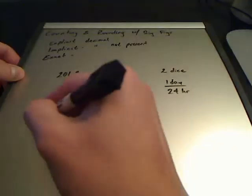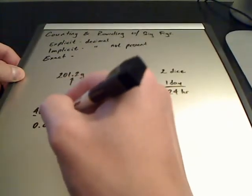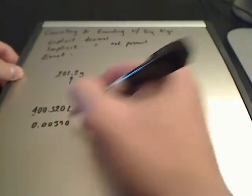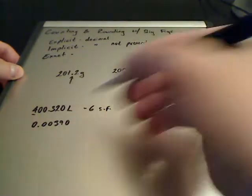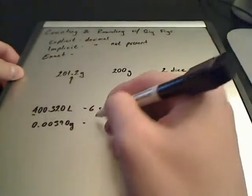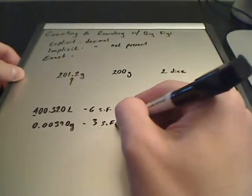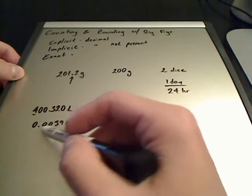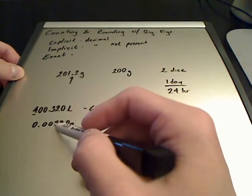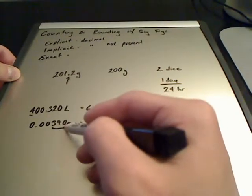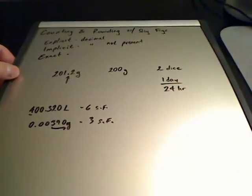Another example would be 0.00390 grams. This would be three sig figs. Why? Because it's explicit with the decimal present. Start with your first non-zero, which is your 3, and count everything to your right, giving a total of three significant figures.